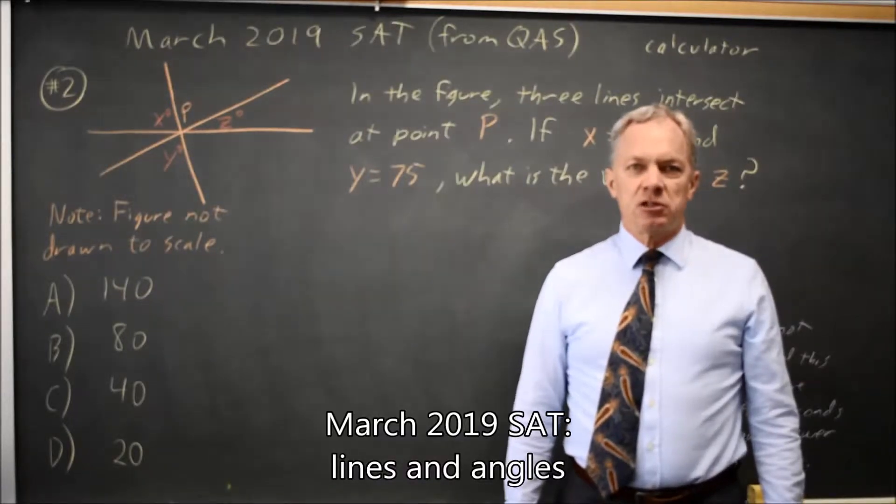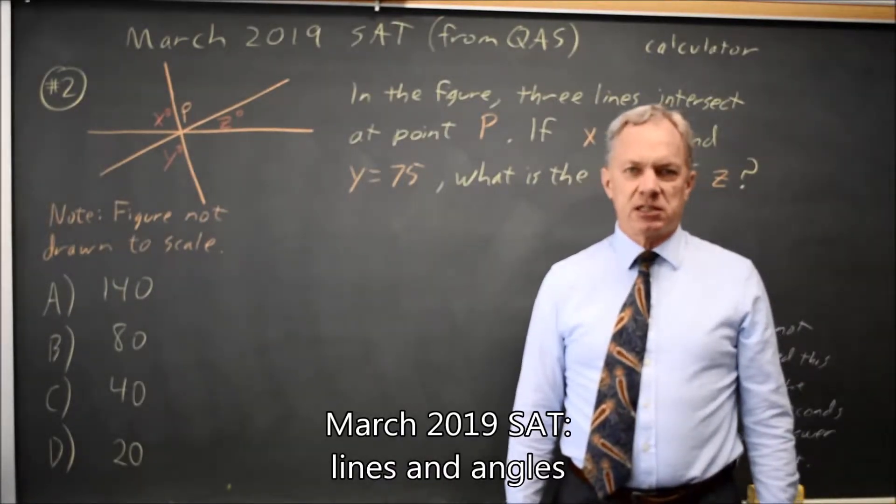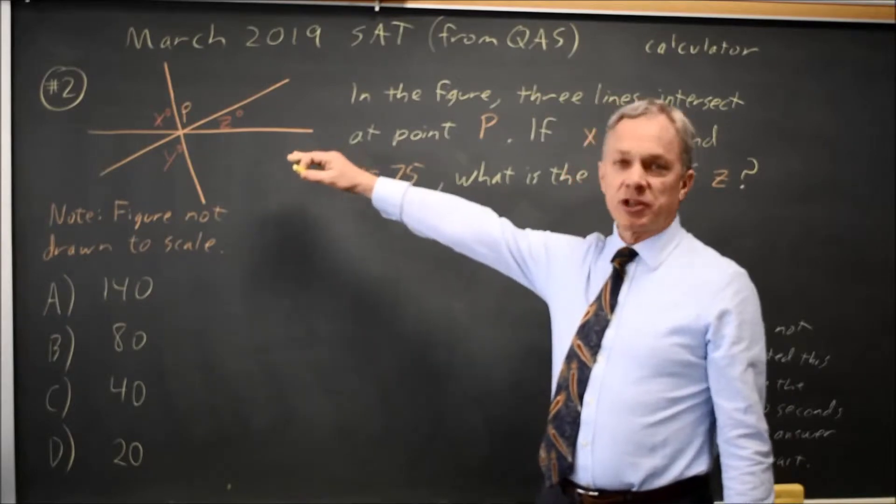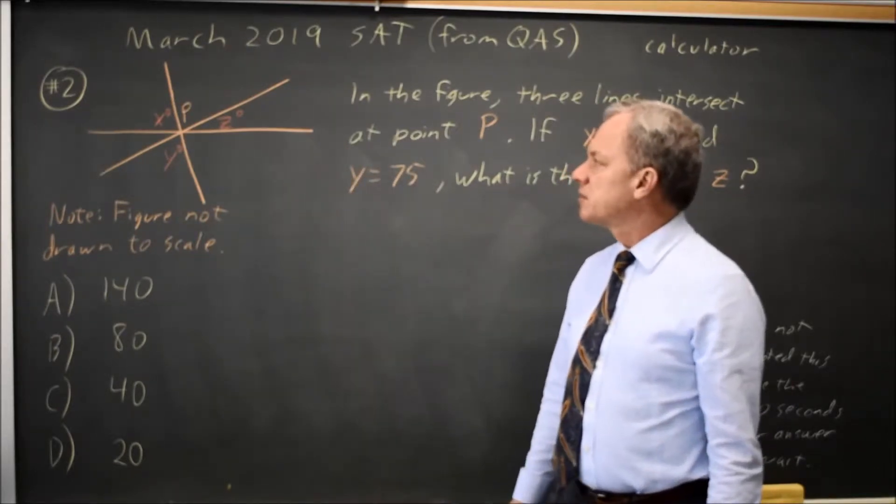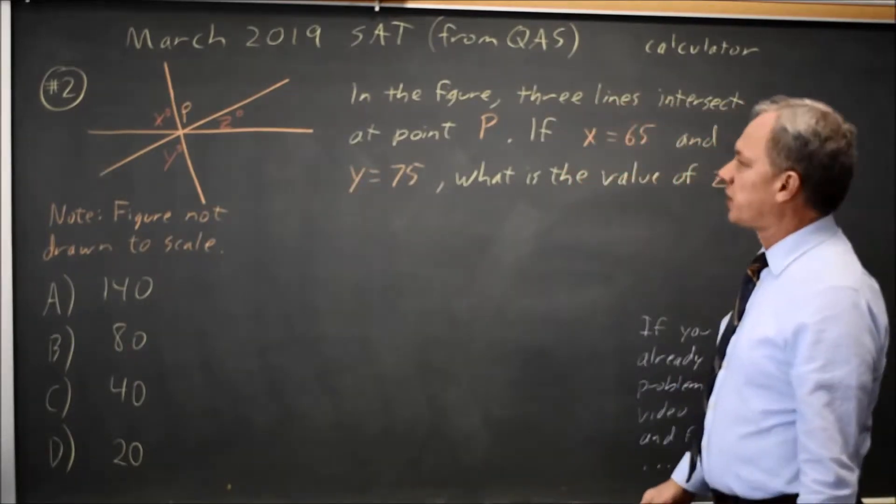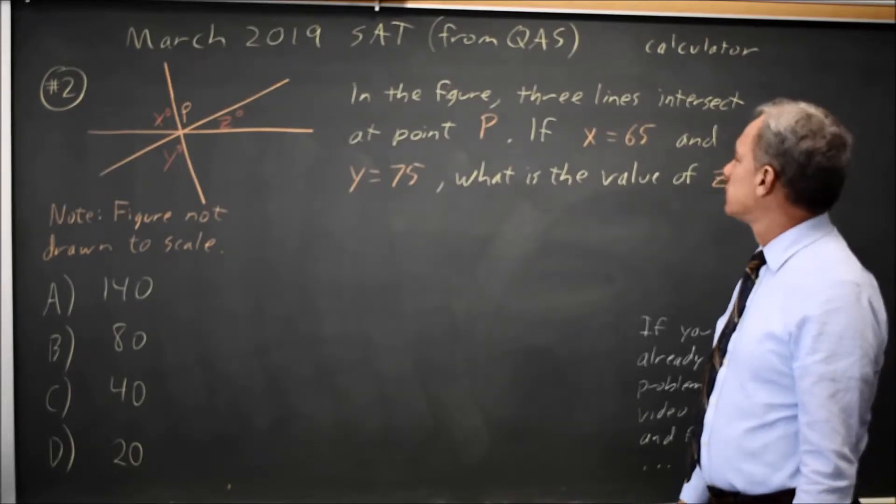This is calculator question number two from the March 2019 SAT. College Board gives us a figure with intersecting lines, gives us some of the angles, and asks for the value of the angle marked as Z degrees.